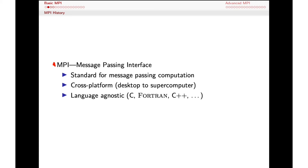MPI is a cross-platform implementation. It's been around for quite some while and runs on everything from your desktop machine to some of the largest supercomputers. It's also language agnostic, so there's support for C and C++, but also older languages like Fortran, which is still very widely used in a lot of supercomputing applications.